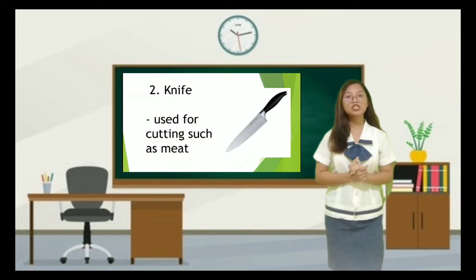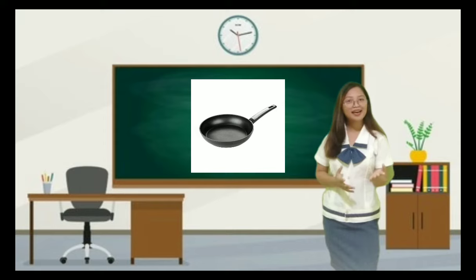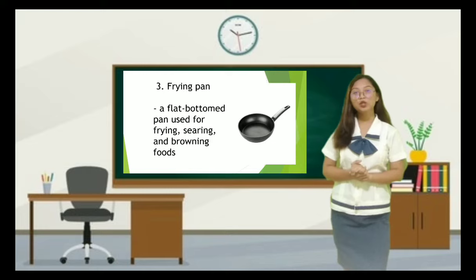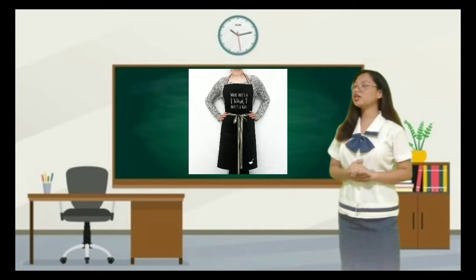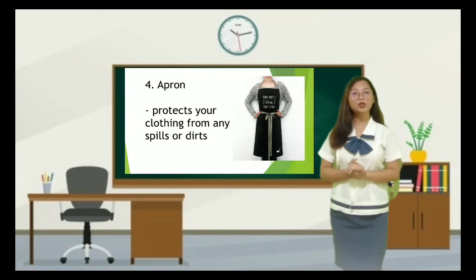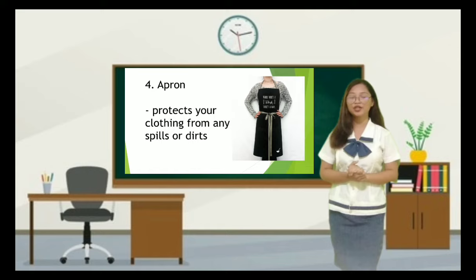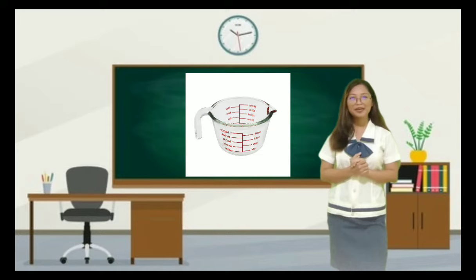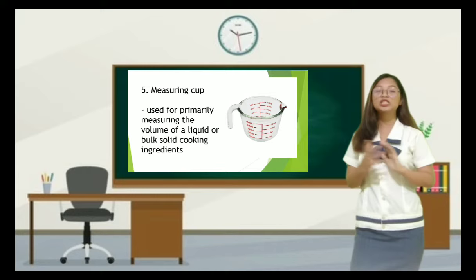Number three — Elsa, very good, it is a frying pan. It is a flat-bottomed pan used for frying, searing, and browning foods. Number four — it is an apron. What is the use of an apron? It protects your clothing from any spills or dirt. Number five — Dana, it is a measuring cup, used for measuring the volume of liquid or solid cooking ingredients such as flour and sugar, especially volumes above 50 ml.